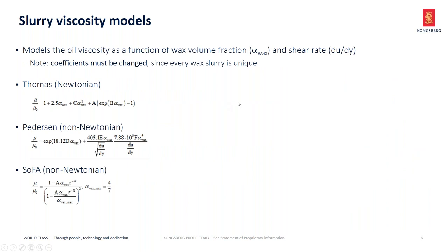The slurry viscosity models: once wax particles form in the oil, the oil viscosity will start to change because of this dispersion. We have the option of using three different viscosity models. The Thomas model was the first one implemented — it is Newtonian and takes into account the concentration of wax particles, not dependent on shear rate. The Pedersen model is well known if you use PVT-SIM, and you can also derive parameters using multi-flash — this one is dependent on shear rate (du/dy in the equations). The SOFA model is also Newtonian and was proposed by Total. You can use any of these models to model the slurry viscosity.